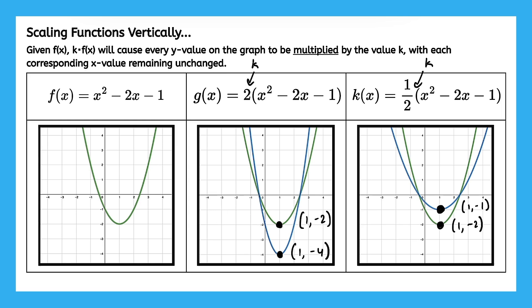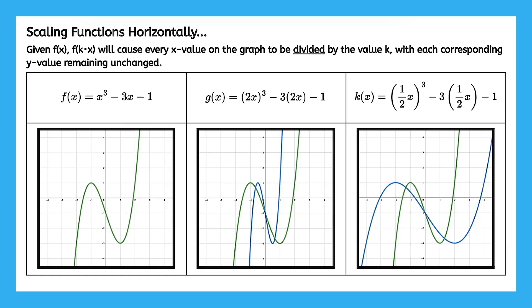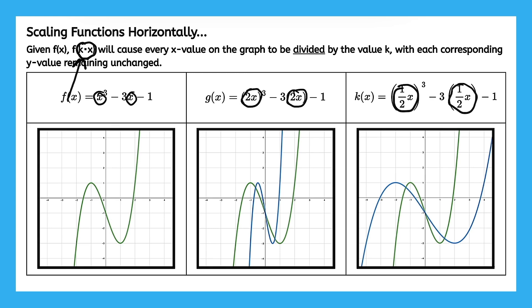Now don't get too overly confident because horizontal scaling is a little bit more counterintuitive. Given f of x, f of k times x will cause every x value — notice x value, not y value — on the graph to be divided by the value k, with each corresponding y value remaining unchanged. What is f of k times x saying? It's saying that we replace x with something times x. So here, we replaced x with 2x in both places where x was, and in k of x, we replaced x with 1 half x. That's what k times x means.